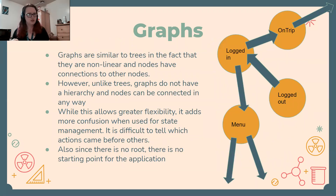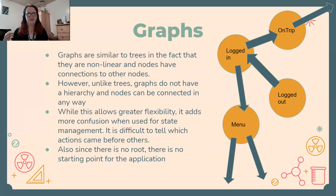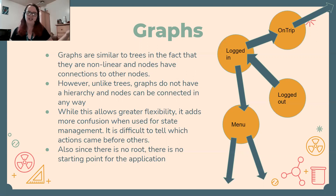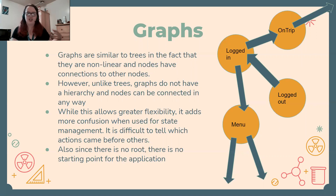What about a graph? A graph is similar to a tree in that it's non-linear and nodes can have connections to other nodes. However, it's different in that there's no hierarchy — no top, no bottom — and nodes can be connected in any way. In a tree, parents can only be connected to children and children cannot connect back to parents. In a graph, it's anyone's game — you can connect to however many nodes you want in any direction. While this allows greater flexibility, it becomes more confusing for state management. You can't tell what are the actions versus outcomes, or which actions come before others. Since there's no root, there's no clear starting point for your application. So it's not as intuitive as a tree, and since a tree handles all your actions and makes sense that way, it's better to use a tree.